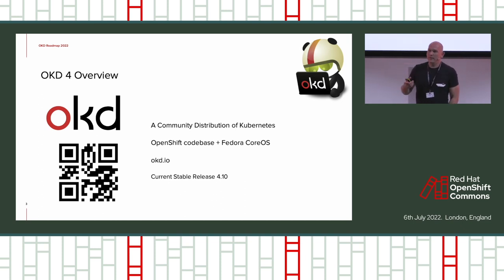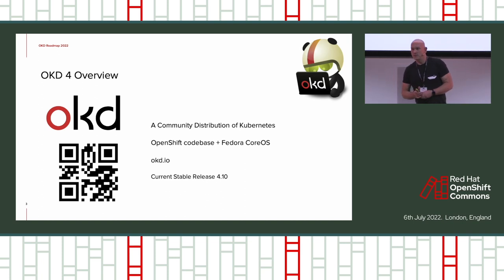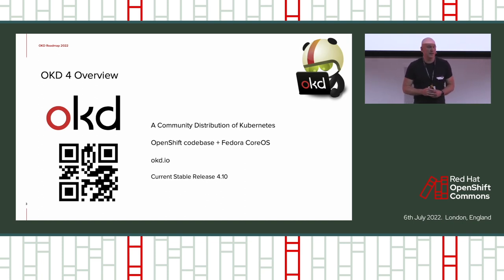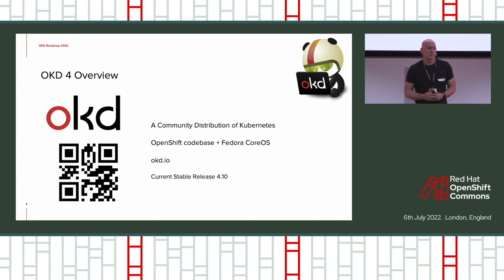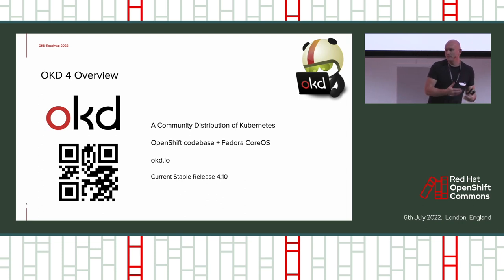It is the OpenShift source code, but instead of being built on Red Hat Enterprise Linux, we use Fedora Linux. Fedora is where all the new features arrive first — it's the most dynamic version of Linux that Red Hat uses. And this is also the first place that the OpenShift source code meets the new feature.